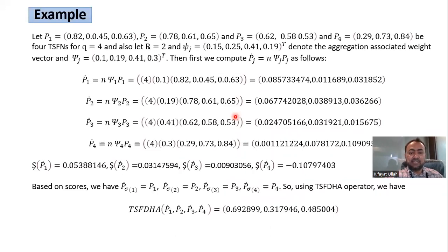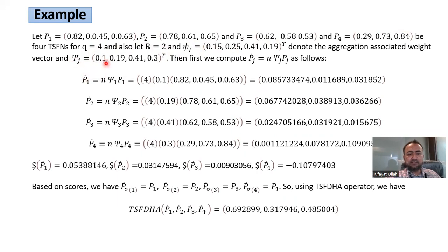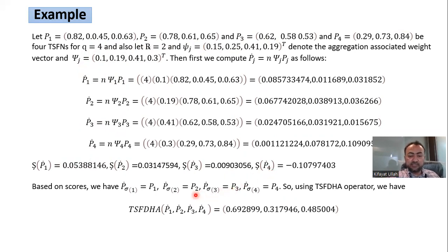In the example for the hybrid averaging operator, we take four T-spherical fuzzy numbers with Q equal to 4 and R equal to 2. The aggregation weight and the weight of T-spherical fuzzy arguments are given separately. First, we give weights to the T-spherical fuzzy arguments, then compute their scores to rearrange them in order, and then aggregate them. The result is again a T-spherical fuzzy number.